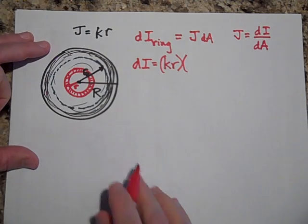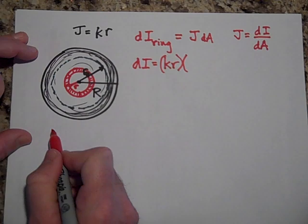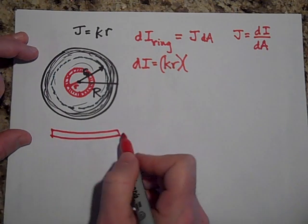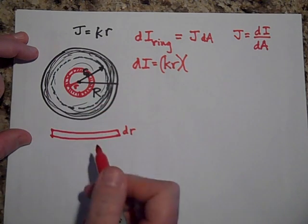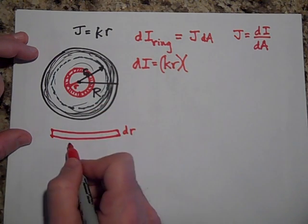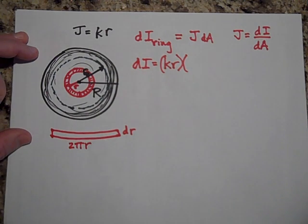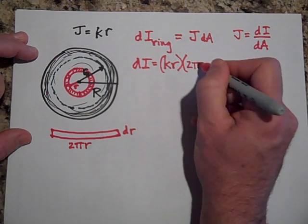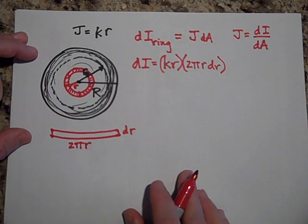Okay, now the dA is, if I cut this and roll it out, we have, this is a thickness dR, it's very thin, this ring is very thin, and it's got a length of 2πR. And so, dA is really 2πR times dR.